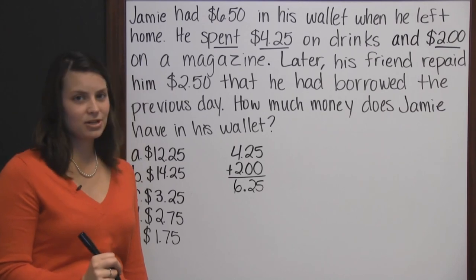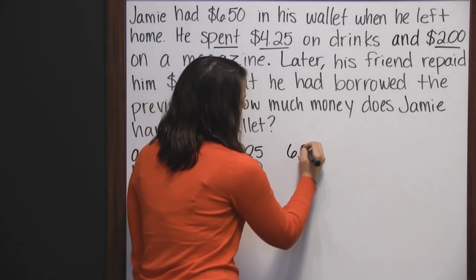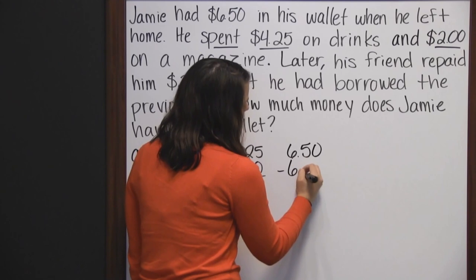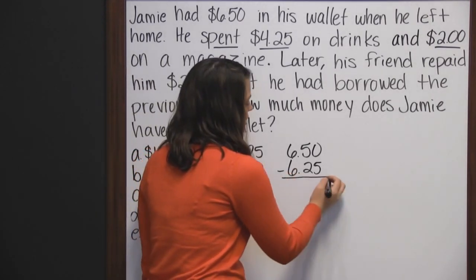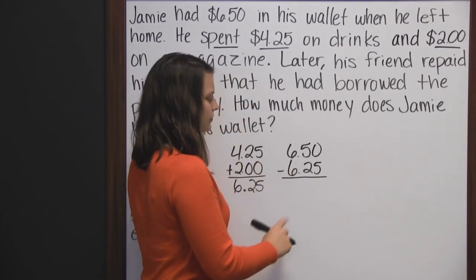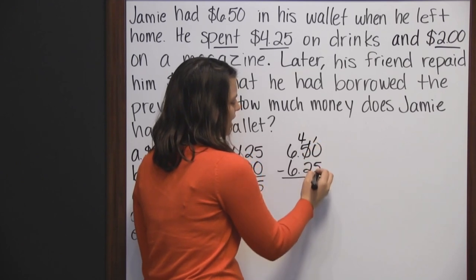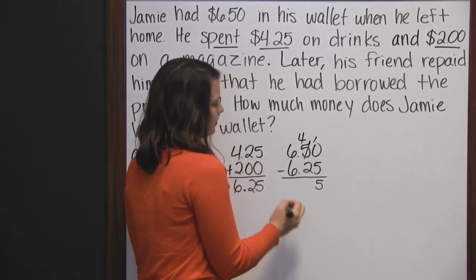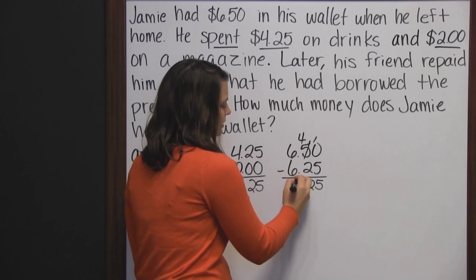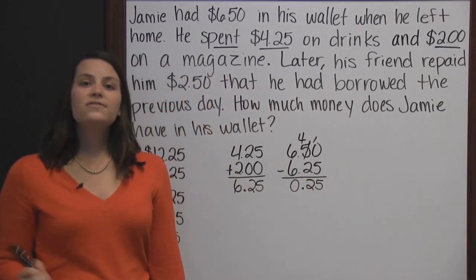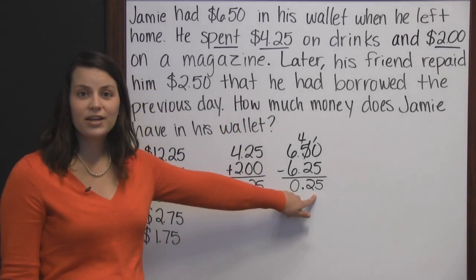If he spent that much money, that's money taken away from what he had. He started with six dollars and fifty cents but spent six dollars and twenty-five cents, so I subtract. Can't take five from zero, so I borrow from the five — it becomes a four — and now I have ten minus five is five. Four minus two is two. Bring down the decimal. Six minus six is zero. After spending $4.25 on drinks and $2.00 on the magazine, he only had twenty-five cents left.